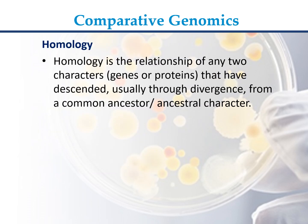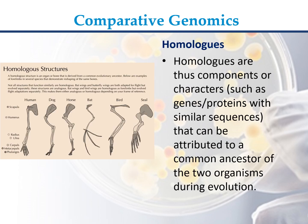Homology is the relationship of any two characters — genes or proteins — that have descended, usually through divergence, from a common ancestor or ancestral character. Homologues are thus components or characters, such as genes or proteins with similar sequences, that can be attributed to a common ancestor of the two organisms during evolution.